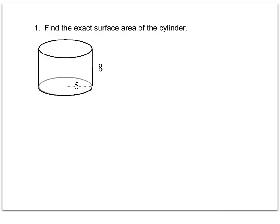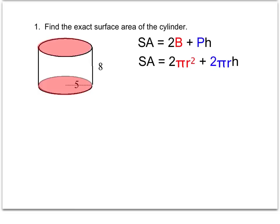I always like to start these problems by writing out the formula and identifying the bases. This formula for a cylinder is similar to that of a prism: 2 times b plus the perimeter times the height.